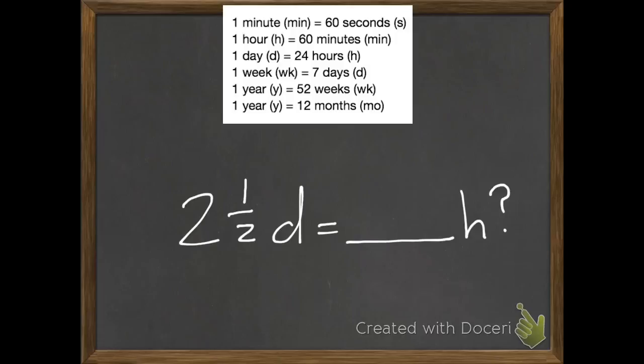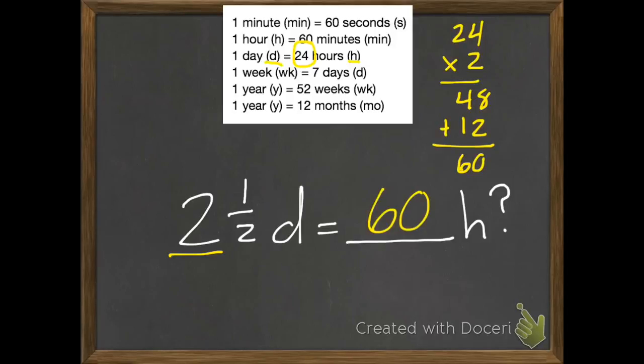Last one to try with me. 2 and a half days equals how many hours? Pause it and unpause when you're ready to check. So 1 day has 24 hours, and we have 2 whole days. So 24 times 2 equals 48. And a half of a day would be half of 24, which is 12. So 48 plus 12 is 60. So 2 and a half days equals 60 hours.